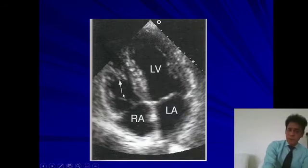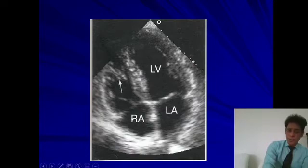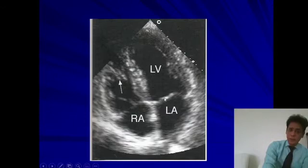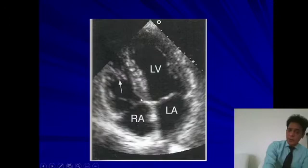The condition where the right atrium is connected to the right ventricle and the left atrium to the left ventricle is known as ventriculoatrial concordance. Many times, when there is situs solitus — which is the normal arrangement — the right atrium may be connected to the left ventricle and the left atrium to the right ventricle. In that case, if the right ventricle moves to the other side, the moderator band and the leaflet will also move.